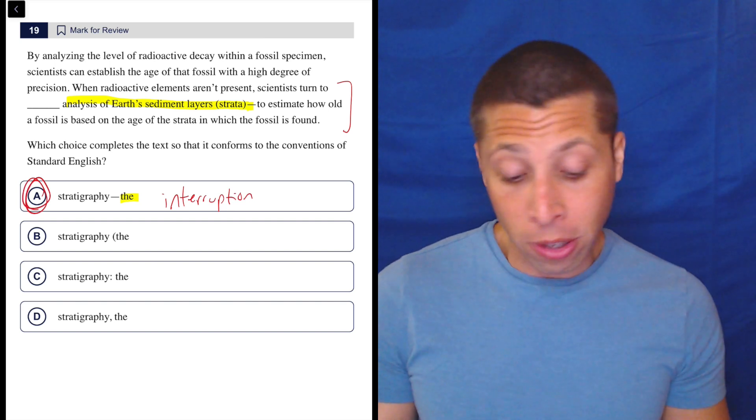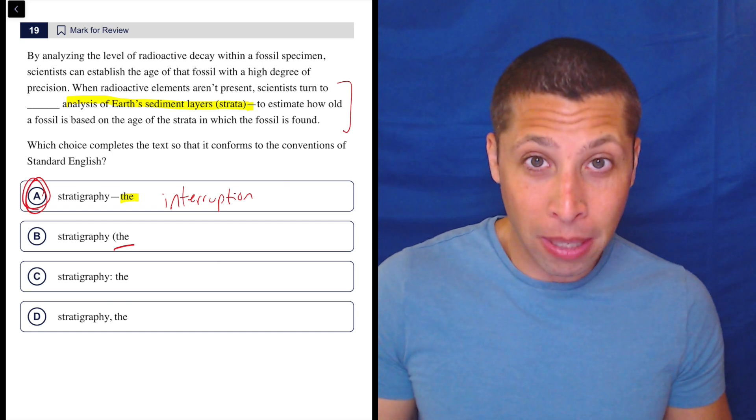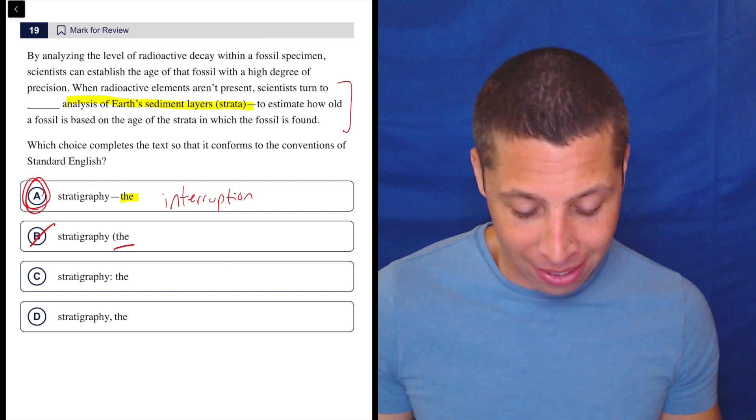Just to talk about the other choices, we could have inserted the interruption with parentheses. That's totally fine. But there's no close parentheses. They didn't end that. So we're not allowed to start with parentheses and end with the dash. That doesn't make any sense.